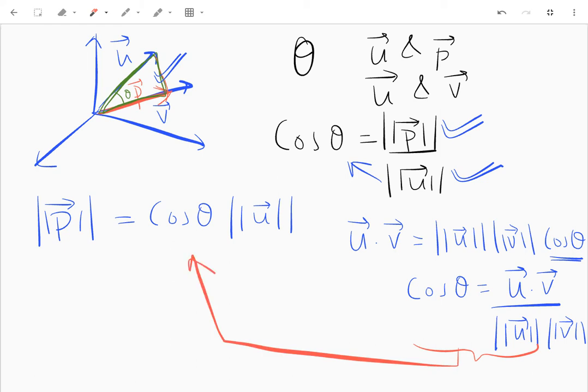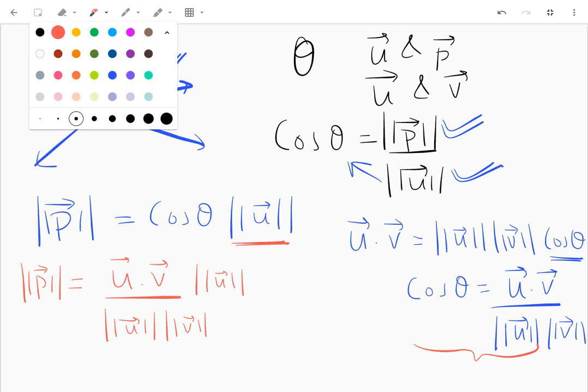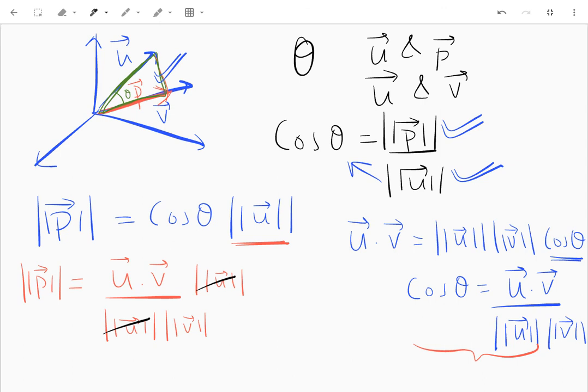So what I get is the norm of p, or the magnitude of vector p, is equal to u dot v over the magnitude of u magnitude of v, and this u here magnitude of u. So this will cancel out and what I'm left with is u dot v over the norm of v.